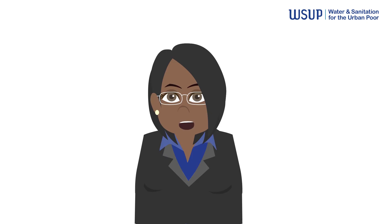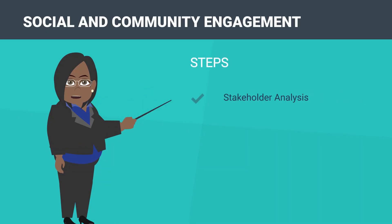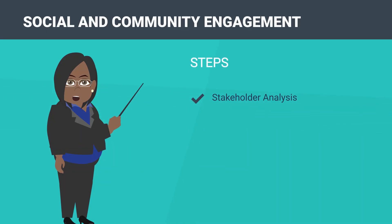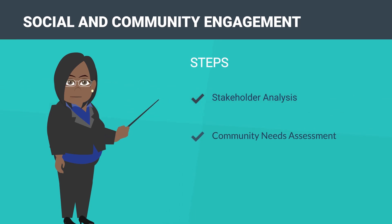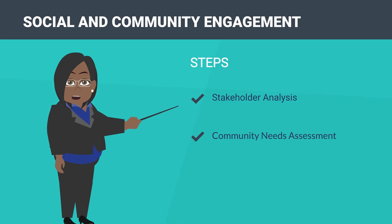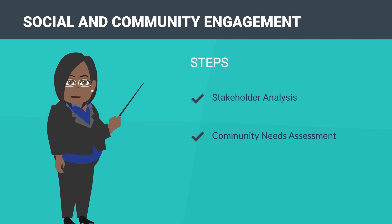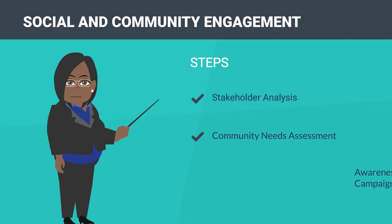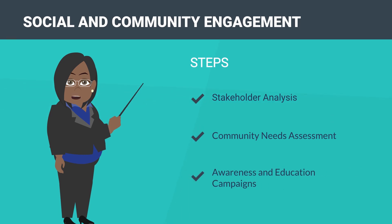The steps to follow include: stakeholder analysis to identify and understand the key stakeholders involved in the implementation and utilization of the simplified sewer system, and a community needs assessment to conduct a thorough assessment identifying the specific needs, preferences, and challenges of the community regarding sanitation and use of the sewer system.